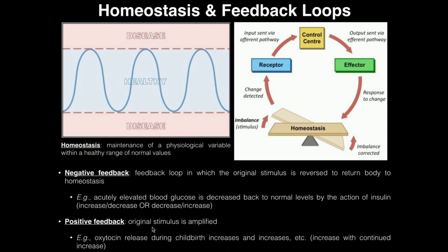Another type of feedback loop is positive feedback, where the original stimulus is amplified rather than reversed. It's like if you start with two of something, you go to four, then eight, then sixteen — you keep getting more and more. A classic example is during childbirth: oxytocin levels increase more and more as the baby is being birthed. The key with positive feedback is the original stimulus is amplified, whereas with negative feedback the original stimulus is reversed.